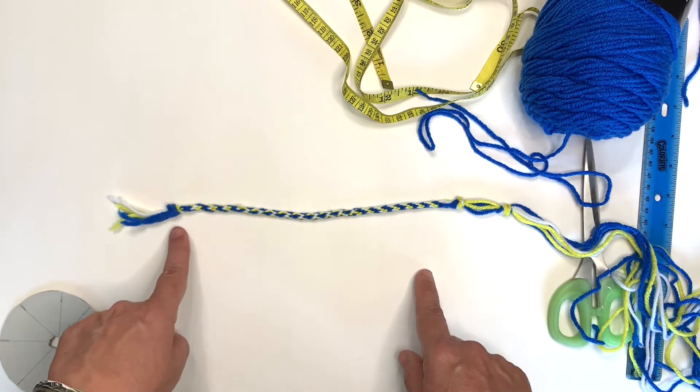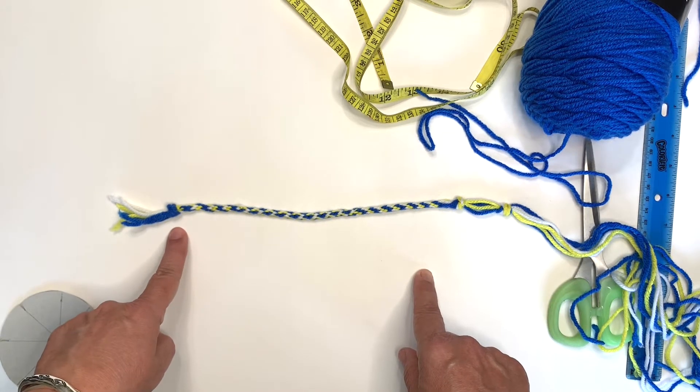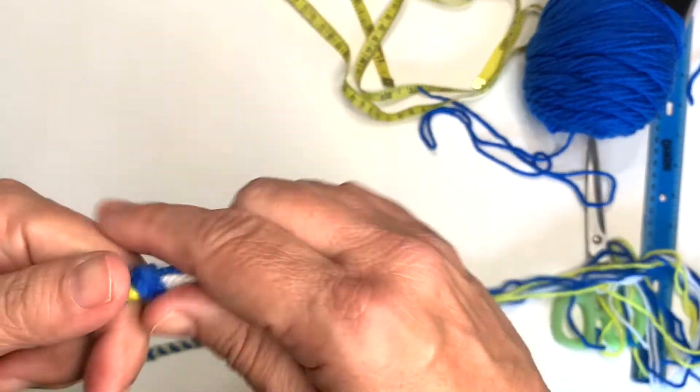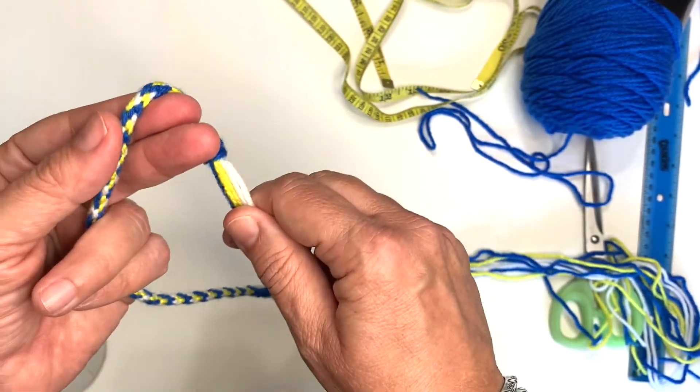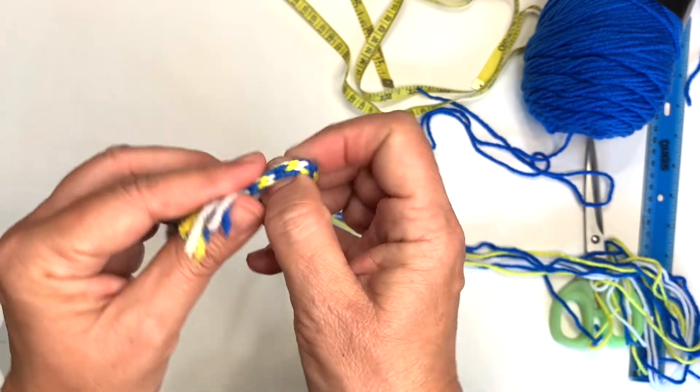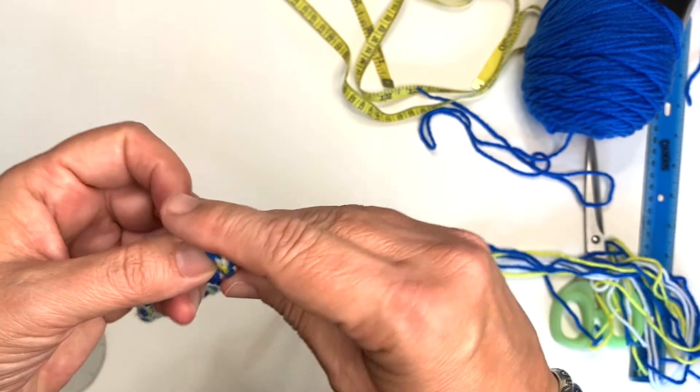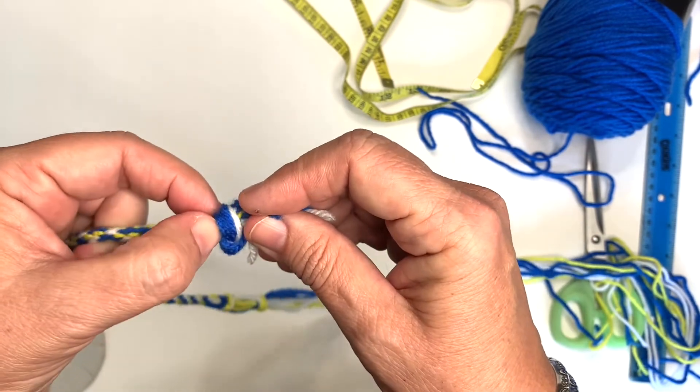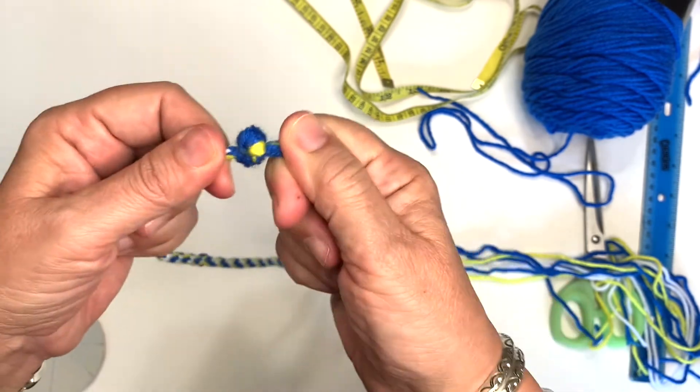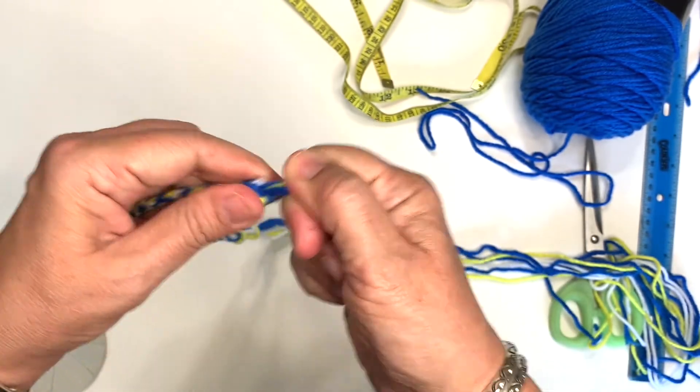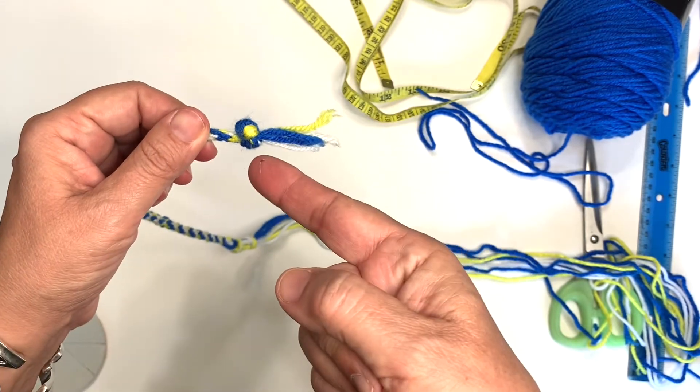The next step is going to be to make another knot right here on top of the first one. So here's my very first knot that was at the beginning of my kumihimo. Now, I'm going to wrap this around my finger and pull this end through. Now, I'm just going to knot it right on top of the last one. See how big that is? That's what we want.